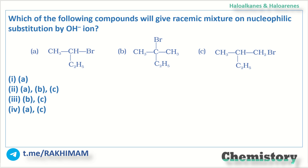The question is: which of the following compounds will give a racemic mixture on nucleophilic substitution by hydroxide ion? Whenever you are asked which compound gives a racemic mixture on nucleophilic substitution, the answer will be the compound that contains a chiral carbon atom. So here, since we are dealing with alkyl halides, we need to see the structure where the halide is directly attached to a chiral carbon atom.